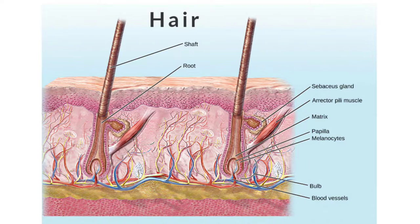Hairs are made up of dead epidermal cells that have been converted to keratin. Hair growth occurs when cells in the hair matrix at the base of the bulb divide and push upward. By the time the cells reach the skin surface to form the shaft, they have been completely converted to keratin.